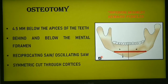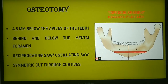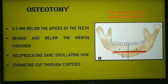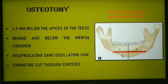The next step is the osteotomy, which is performed using a reciprocating saw or an oscillating saw. Prior to performing the osteotomy, it is always preferable to inscribe the proposed line of osteotomy using a thin burr. This is the proposed line of osteotomy.